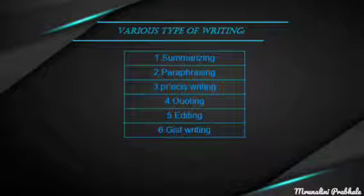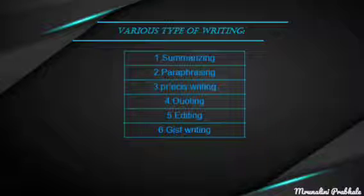Our next point is various ways of writing. Here are six ways of writing: the first one is summarizing, the second one is paraphrasing, the third one is précis writing, the fourth one is quoting, the fifth one is editing, and the last one is gist writing. In summarizing, it includes taking a broader segment of the sources and condensing it. In paraphrasing, it includes restating main ideas in one's own words.